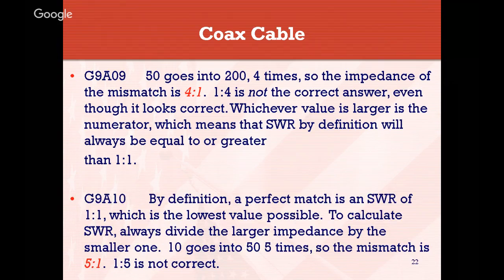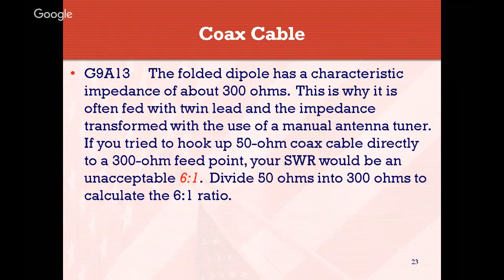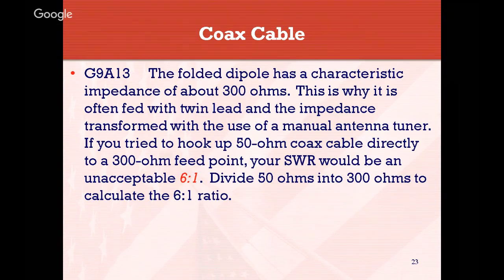By definition, a perfect match is an SWR of 1:1, which is the lowest value possible. To calculate SWR, always divide the larger impedance by the smaller one — 10 goes into 50 five times, so the mismatch is 5:1. Your larger number is always the numerator. A folded dipole has a characteristic impedance of about 300 ohms, which is why it is often fed with twin lead and the impedance transformed with a manual antenna tuner. If you tried to hook up a 50-ohm coax directly to a 300-ohm feed point, your SWR would be an unacceptable 6:1 — 300 divided by 50 equals 6.